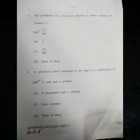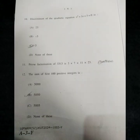Question number 8: The probability of a leap year selected at random containing 53 Sundays is — option A is the right answer: 53/366. Question number 9: A cylindrical pencil sharpened at one edge is a combination of — option A is the right answer: a cone and a cylinder.